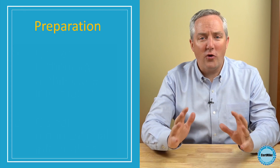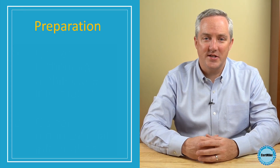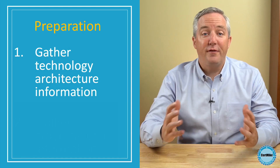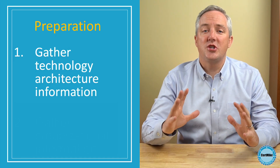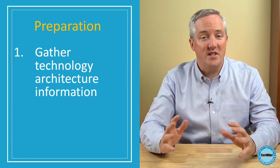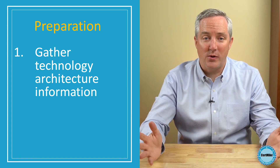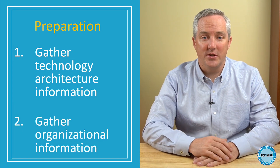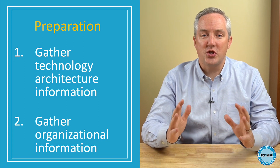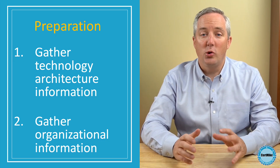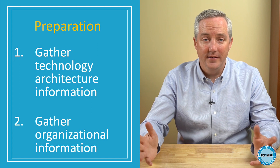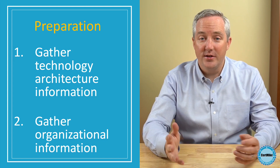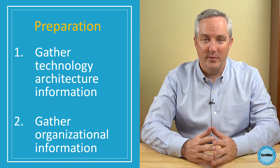Before beginning the risk management process, an organization should gather information from two different categories. The first set of information is about the technology architecture, and it includes reference models, technical details, business process information, and information system boundaries. The second input to the process is organization-specific information, including the laws, regulations, and policies that apply, the strategy of the organization, its priorities, resource availability, and supply chain information.